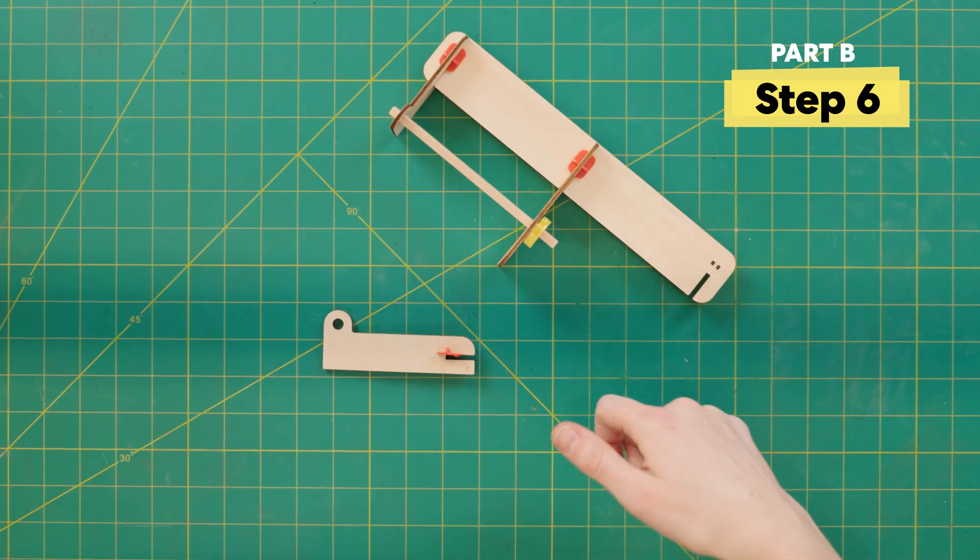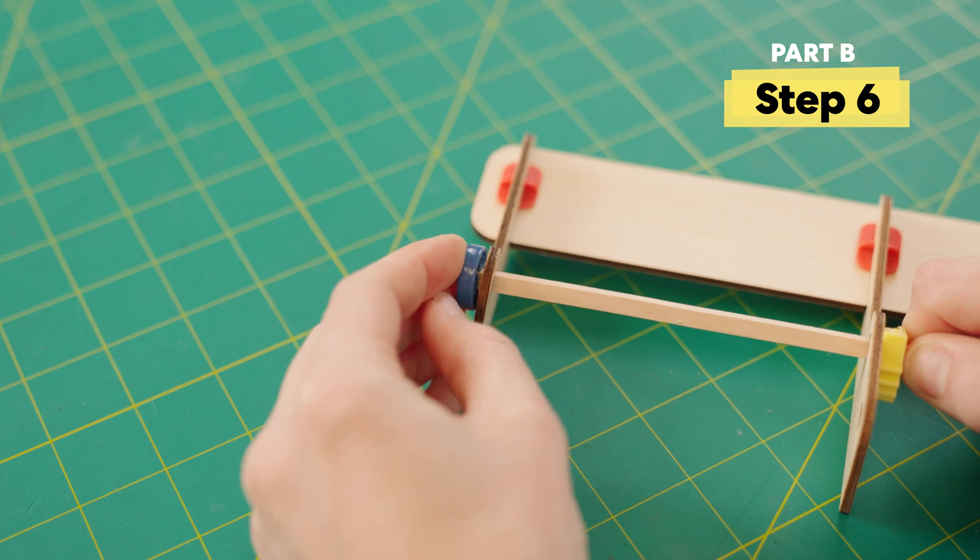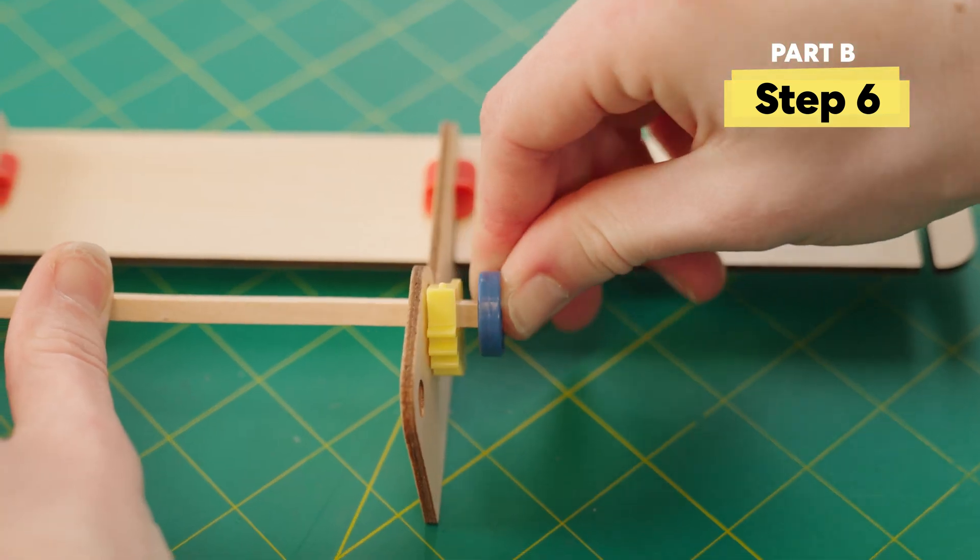Next, you're going to want to sandwich on the two blue rings. Because this target needs to spin easily, it doesn't need to be squeezed really tight.